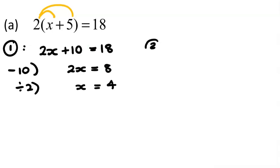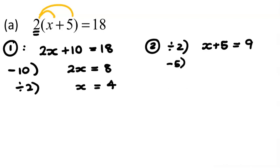Now let's try method number two for this question. Method two involves dividing both sides by the 2 at the front. If we divide 2 times what's inside the brackets by 2, we've undone that 2, so we're just left with x plus 5. That equals 18 divided by 2, which is 9. Then we take 5 away from both sides: x equals 4. Using strategy 2 for part A, we only needed two lines of working rather than three. Same answer — both methods equivalent.